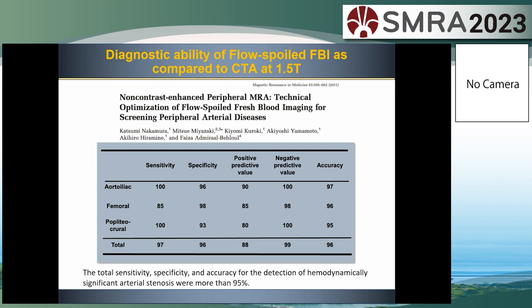Comparison of flow-spoiled FBI using parallel imaging with CT angiography performed by 16-detector row CT: the depiction of occlusion of bilateral SFAs and many collateral arteries are comparable. Diagnostic ability of flow-spoiled FBI at 1.5T are shown on the slide. The total sensitivity, specificity, and accuracy for detection of hemodynamically significant stenosis are more than 95%.